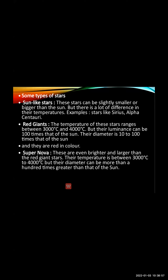Let us come to the first type of star, that is the sun-like star. As the name says, it is bright like the sun and its size is also bigger. Sirius and Alpha Centauri are two examples of sun-like stars. They are called sun-like stars because they are bigger in size and produce a lot of brightness and temperature, similar to the sun.